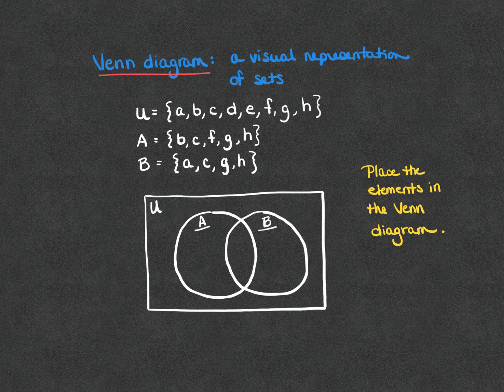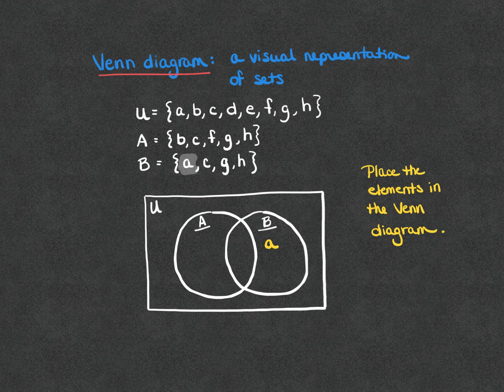Notice that element A is only in subset B. So we're going to place that element A in the part of the diagram that is set B only. Notice we're not putting it in the intersection — we're putting it in the circle that is B but does not overlap with set A.